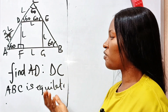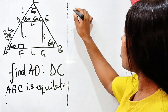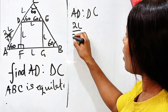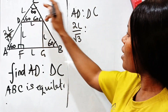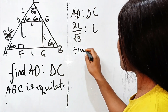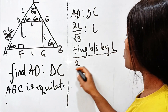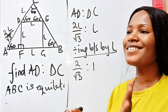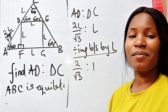Now the problem says we should find AD to DC. So it's going to be 2L over root 3 to L. Dividing both sides by L, we get 2 over root 3 to 1. You can still rationalize this. Thank you so much for watching and see you in my next video.